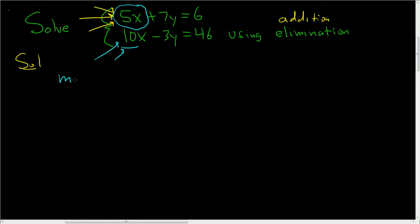So we're going to multiply the first equation by negative 2. OK, that's what we're going to do. So let's do it carefully.